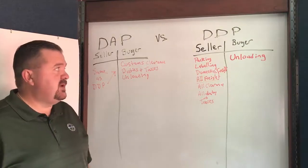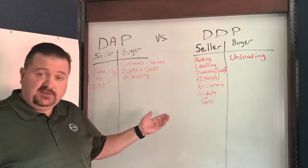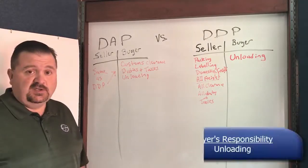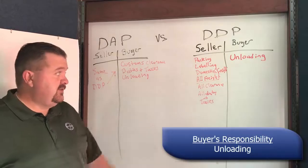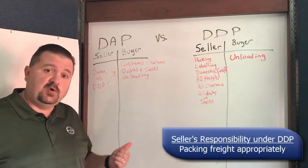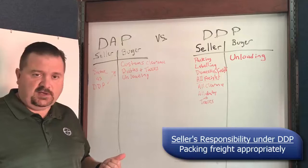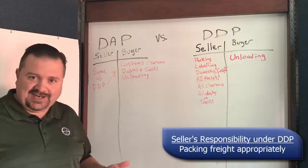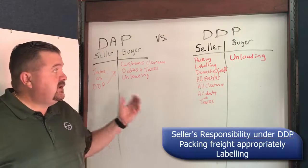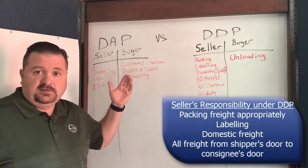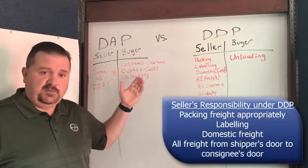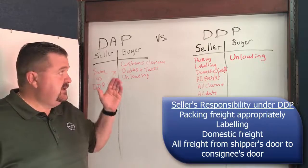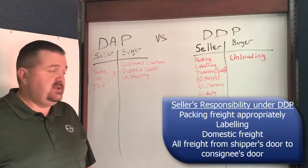So who is responsible for what with DDP? Under Delivered Duty Paid, the only thing that the buyer of the goods is responsible for is unloading. The seller is responsible for packing the freight — and it's important that they pack it in an appropriate type of packaging. You don't want to put a Tiffany lamp in a paper bag because it will break and no insurance company will cover that. Labeling, domestic freight, in fact all freight — every part of that movement from the shipper's door to the consignee's door, the seller is responsible for under DDP terms.